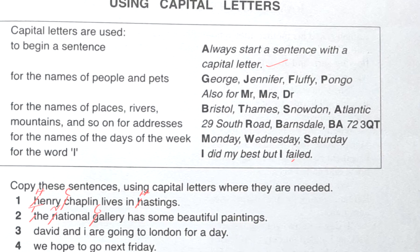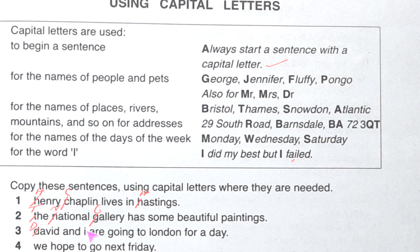Number three: 'david and i are going to london for a day.' Here, 'David' is the name of a person — it should be capital, first letter. And 'I' — we discussed that if we put 'I' alone in a sentence, whether at the first, middle, or last position, it should be capital. And 'London' — this is a place's name — so it will also be capital.